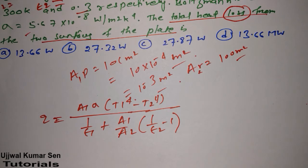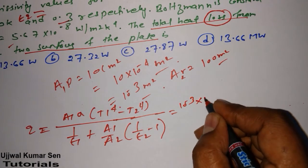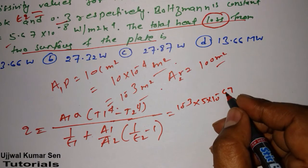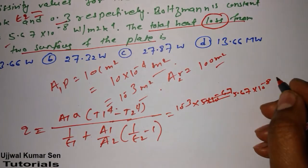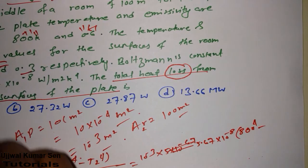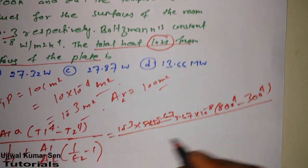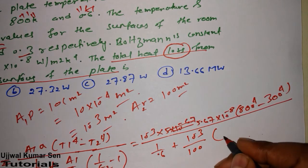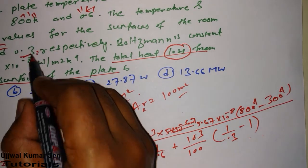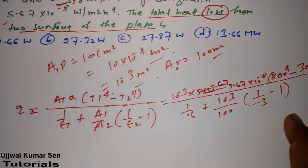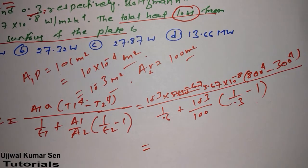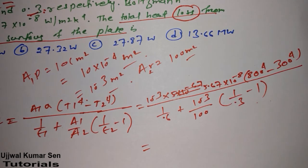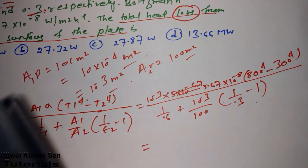A1 = 10⁻³ m², σ = 5.67 × 10⁻⁸, T1 = 800 K, T2 = 300 K, ε1 = 0.6, A2 = 100 m², ε2 = 0.3. All values are written. Now we need a calculator to solve the problem — without one it becomes difficult.